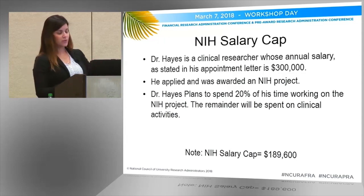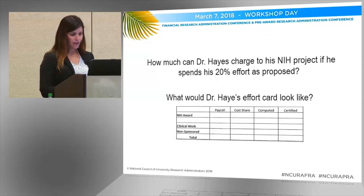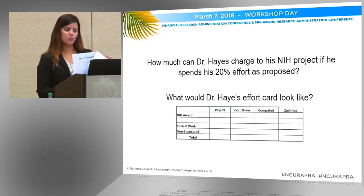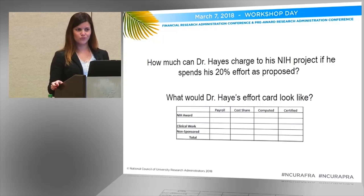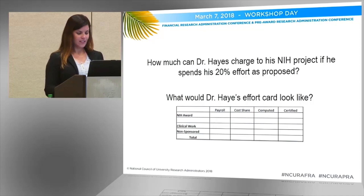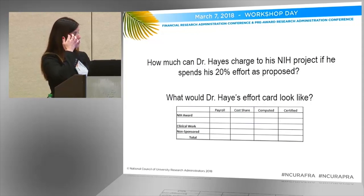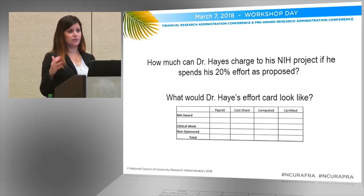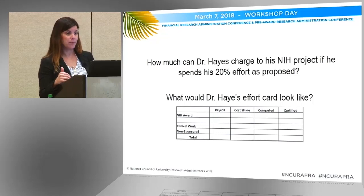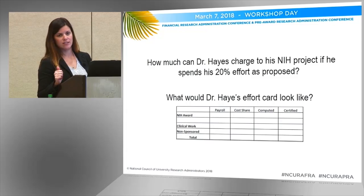So in this case, the proposed cap that we think is going to pass for this year is $189,600. How much can he charge to his NIH project if he spends 20% of his effort as proposed? If you're going to propose 20% of your time, you can charge 20% of the cap. So in this case, he can charge 20% of the $189,600, which is $37,920.